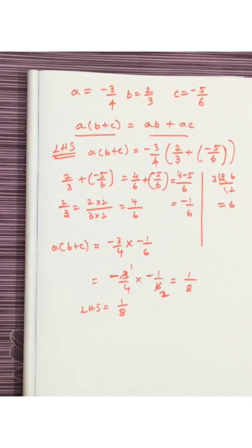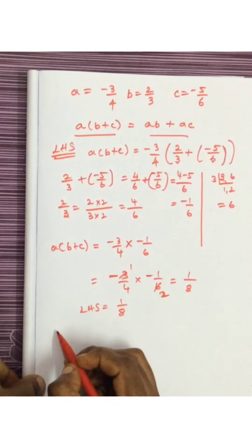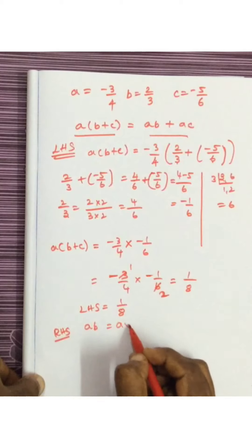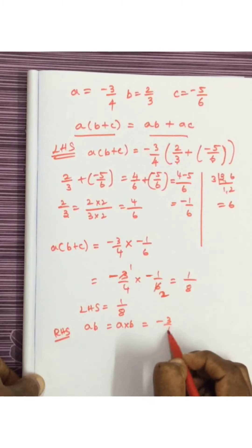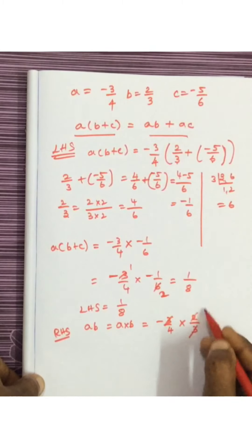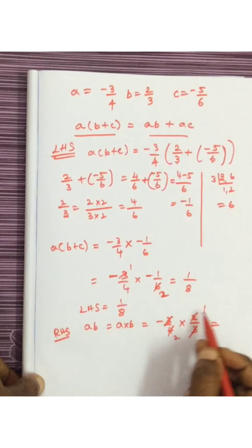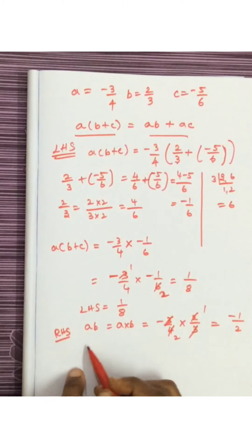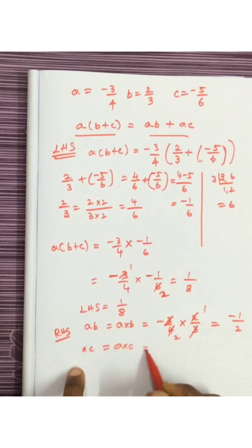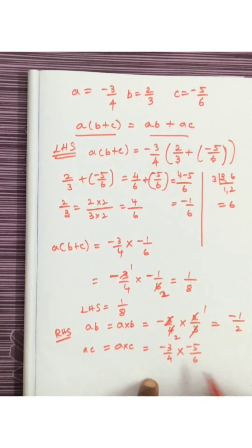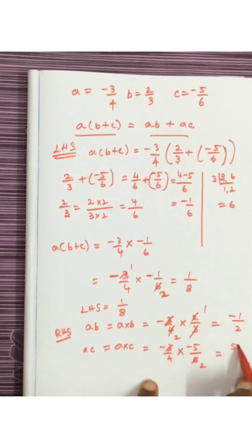Now we have to check the right hand side. First we do A multiplied by B: A is minus 3 by 4, multiplied by B which is 2 by 3. This 3 and this 3 will get cancelled, giving minus 1 by 2. This is AB. Then we do A multiplied by C: A is minus 3 by 4 multiplied by C which is minus 5 by 6. Minus into minus becomes plus, giving 5 by 8. This is AC.